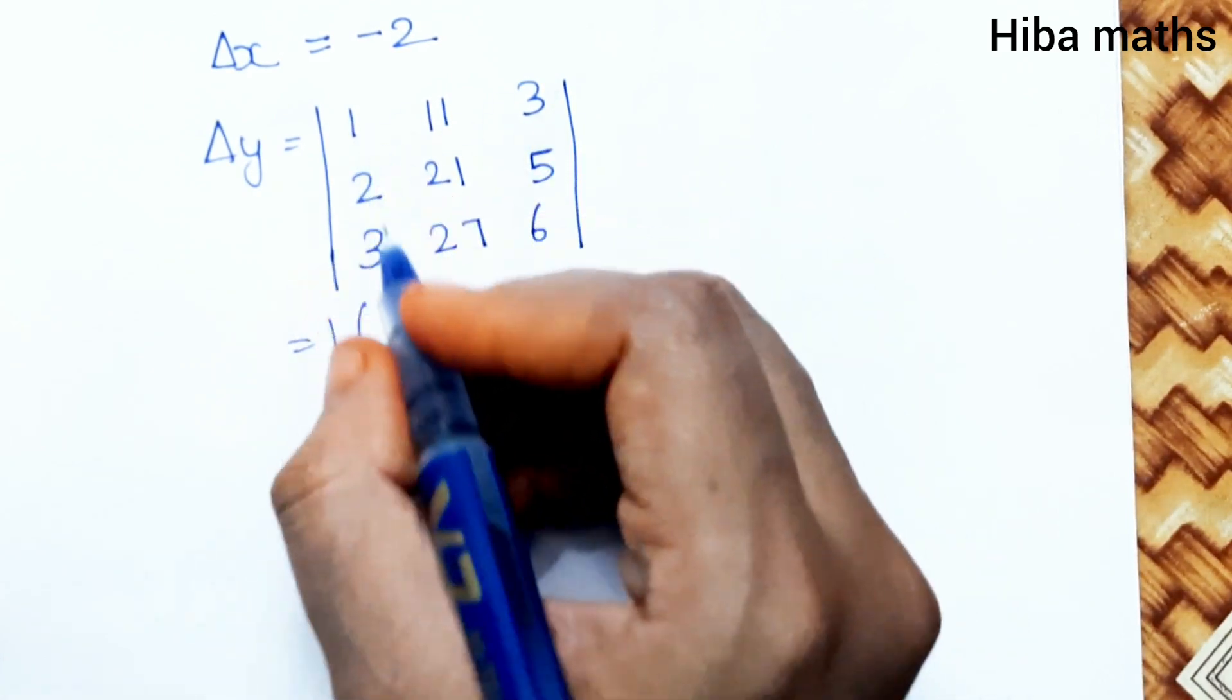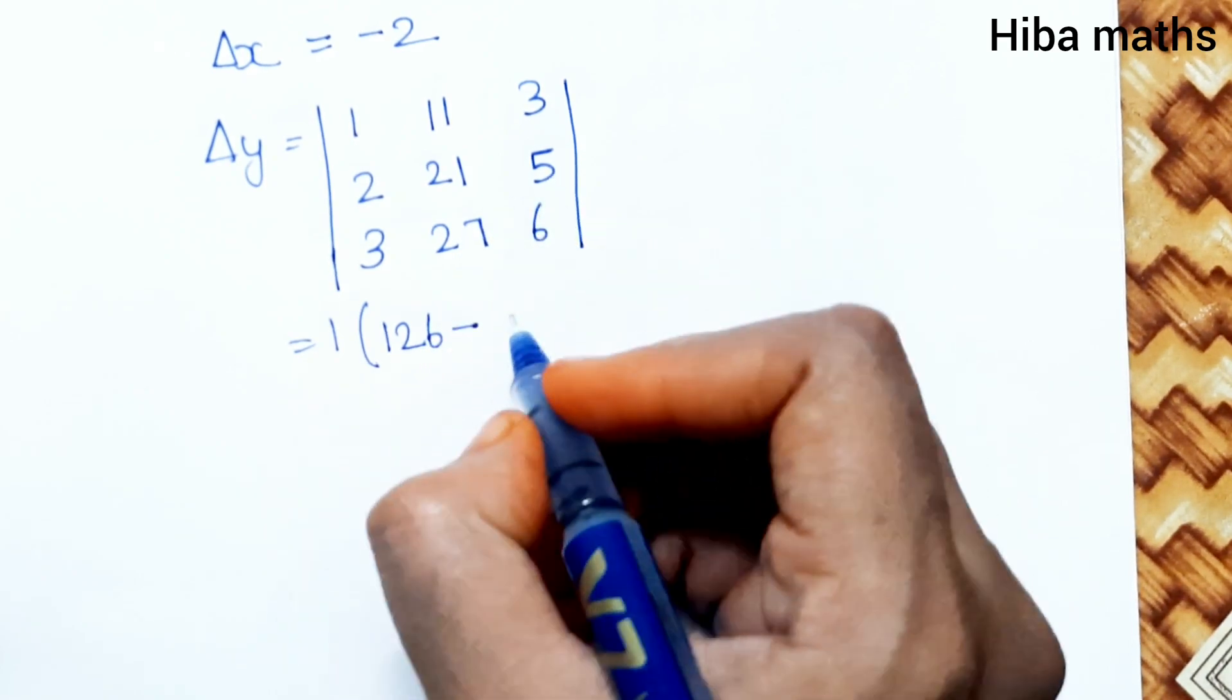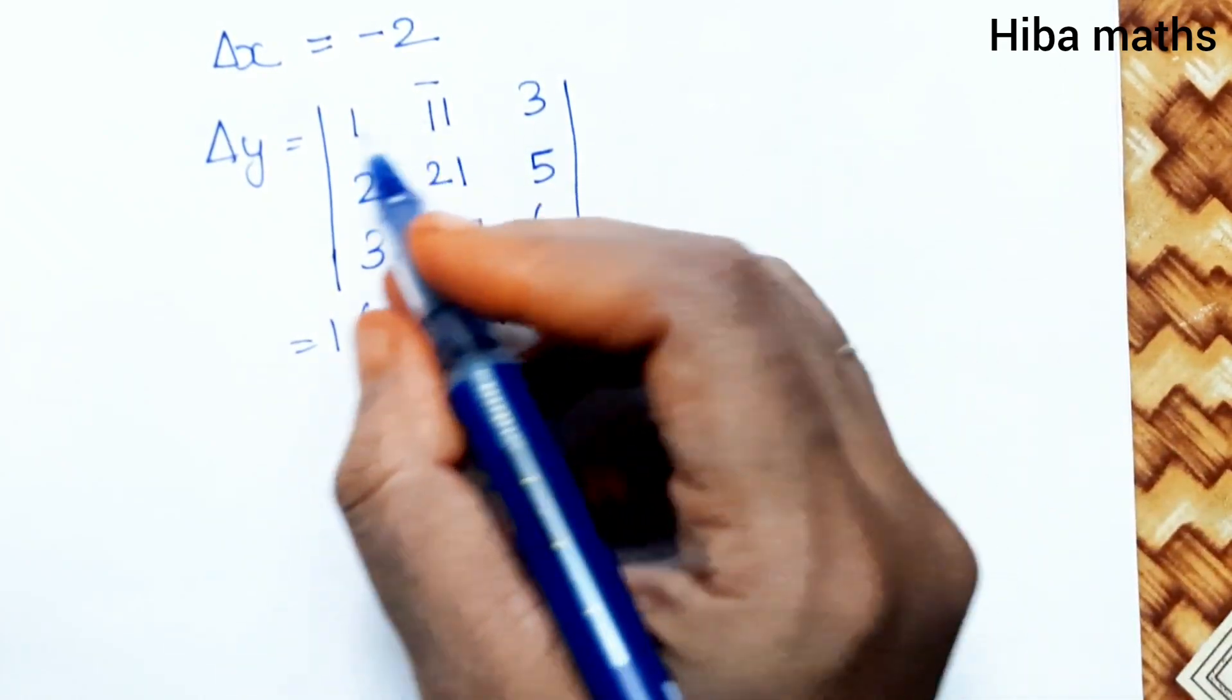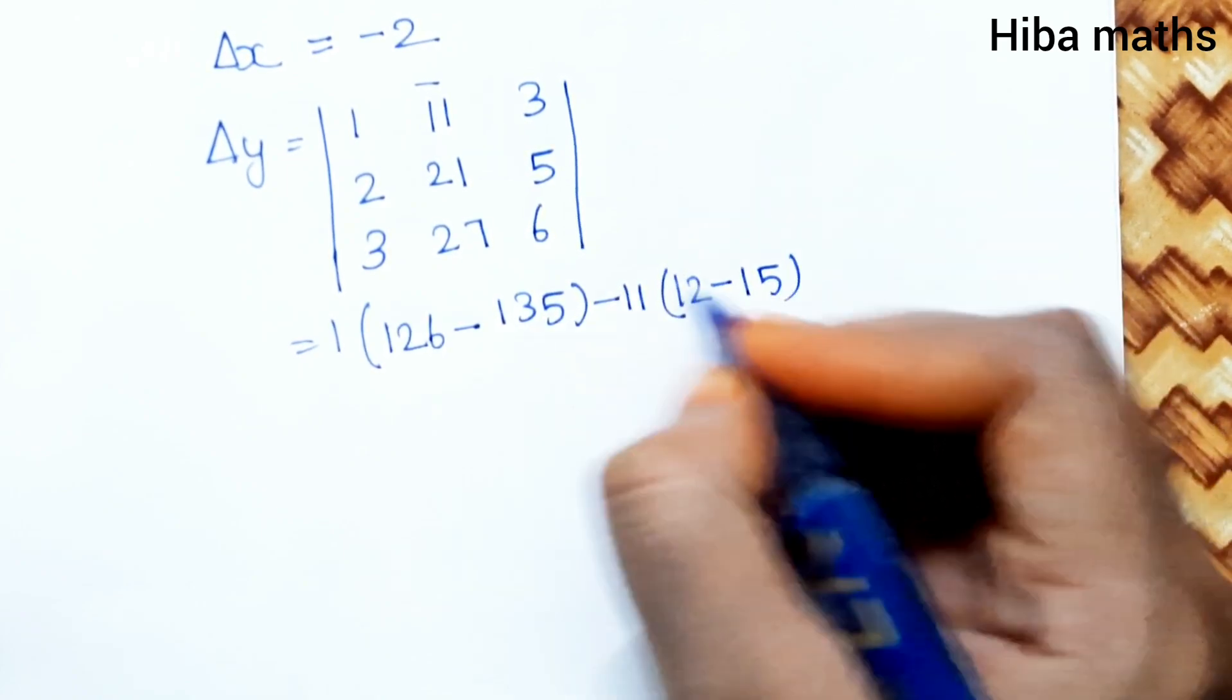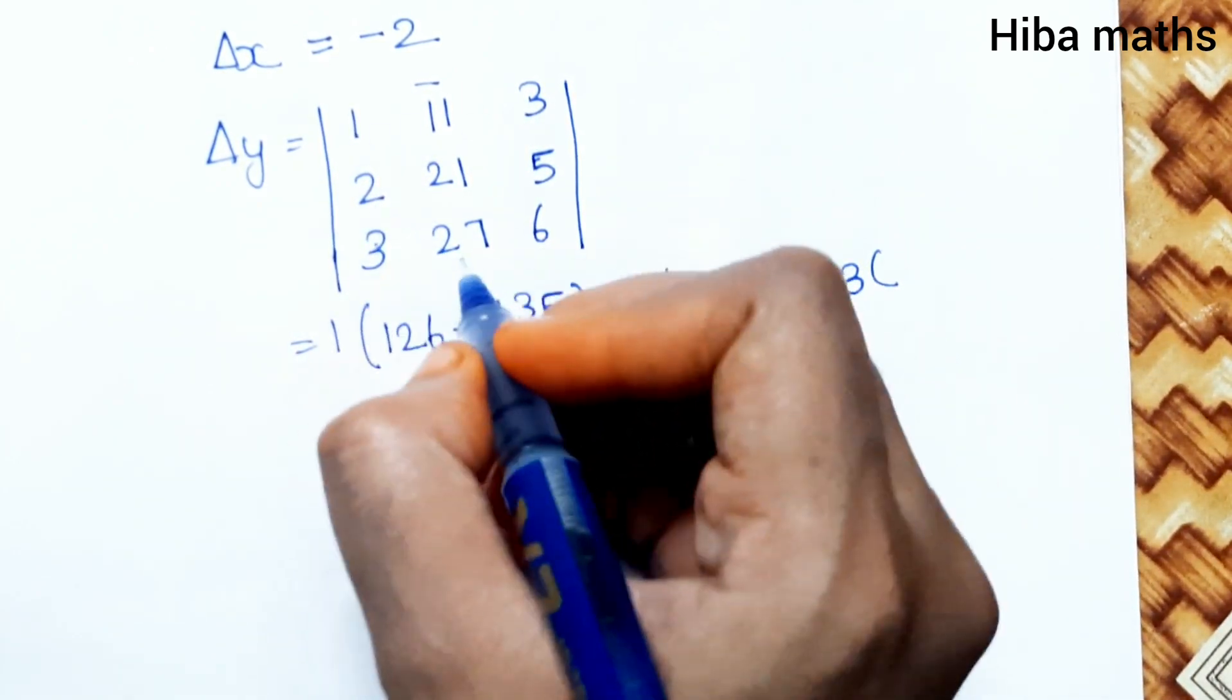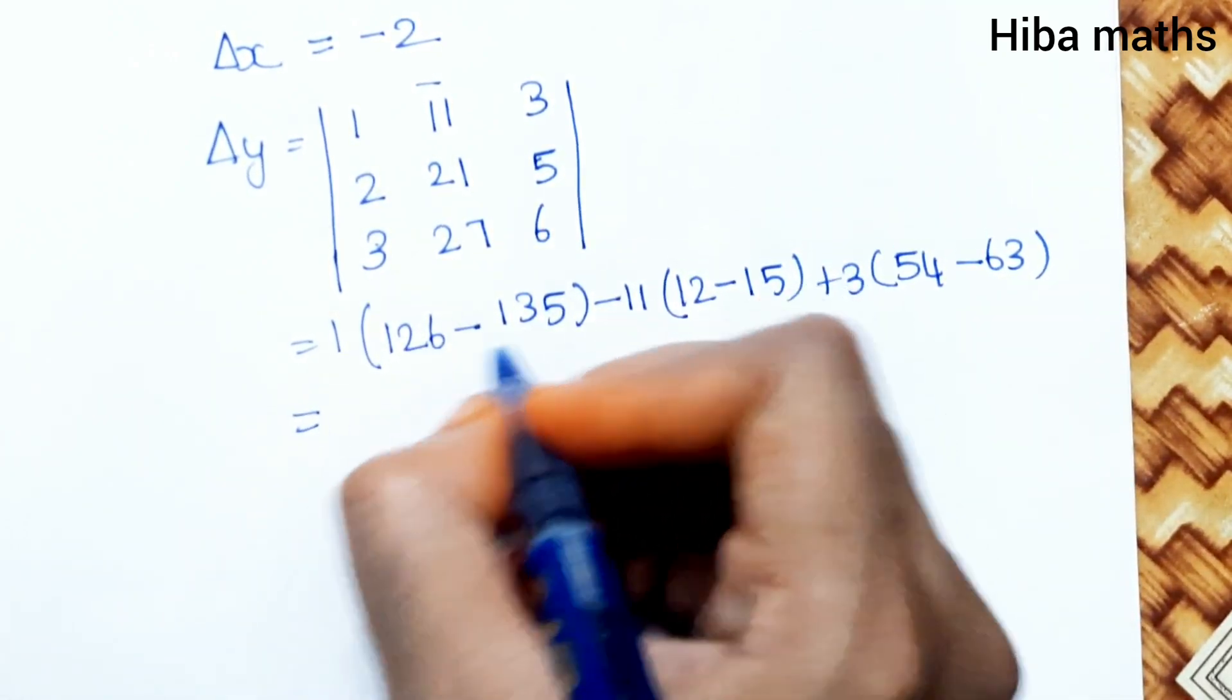1 into (21×6 minus 27×5) = 1×(-9) = -9. Minus 11 into (2×6 minus 3×5) = -11×(-3) = +33. Plus 3 into (2×27 minus 21×3) = 3×(-9) = -27.